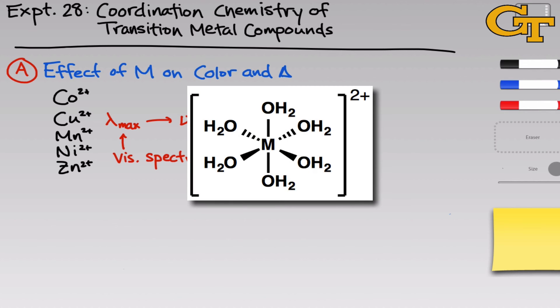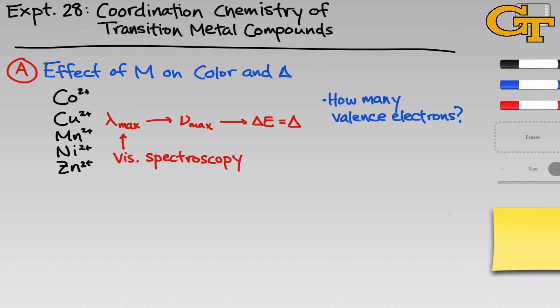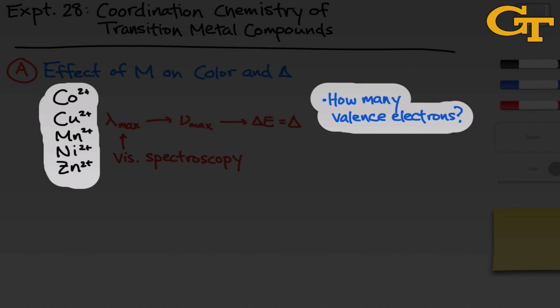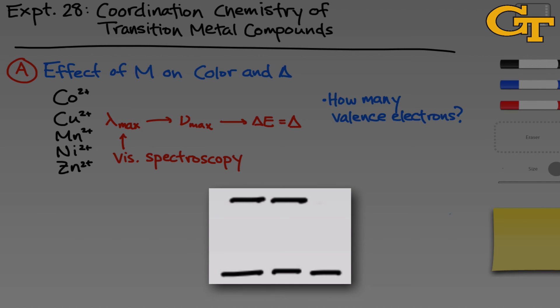Now we've kept the formal charge and the geometry of each complex constant, so really the only thing changing between these five complexes is the number of valence electrons associated with the metal center. So that orbital diagram that we just saw still applies, the only thing that's changing is the number of valence electrons occupying that orbital energy diagram.